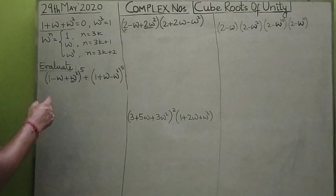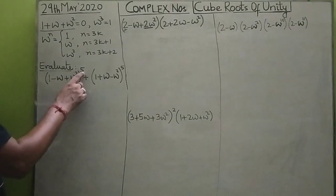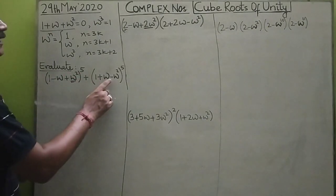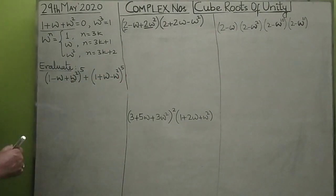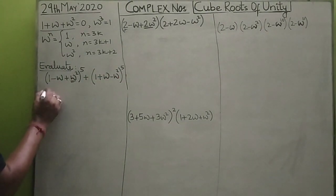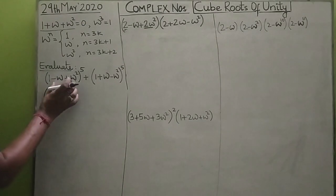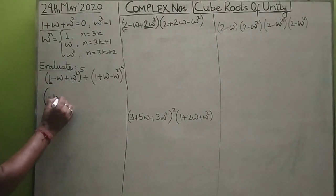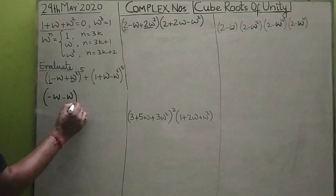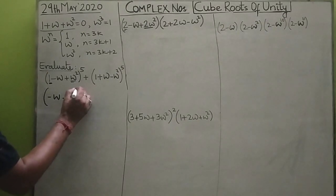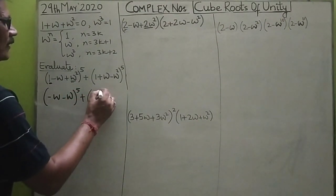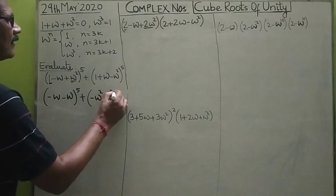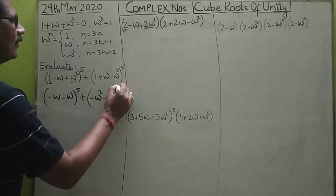The first sum is (1 minus omega plus omega squared) raised to the power 5 plus (1 plus omega minus omega squared) raised to the power 5. In the first expression, 1 plus omega squared can be taken together and equals minus omega, giving (minus omega minus omega) to the power 5. In the second expression, 1 plus omega equals minus omega squared, giving (minus omega squared minus omega squared) to the power 5.